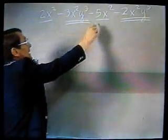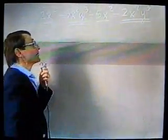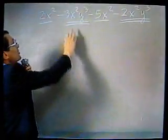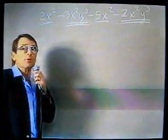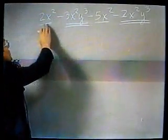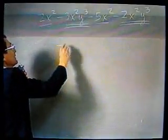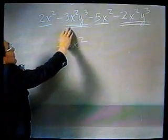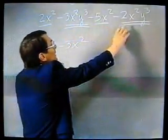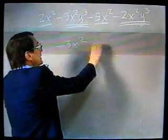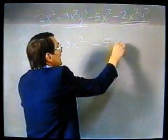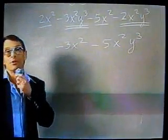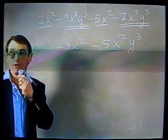The 2x squared and the negative 5x squared are like terms. And these terms are also like x squared y cubed terms both. So we combine 2x squared minus 5x squared gives negative 3x squared, and then negative 3x squared y cubed and negative 2x squared y cubed give negative 5x squared y cubed. So we have combined like terms. We have not changed the exponents at all.